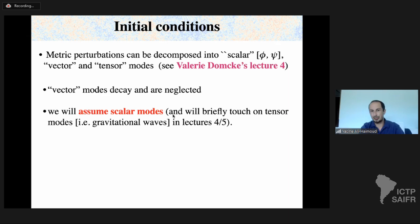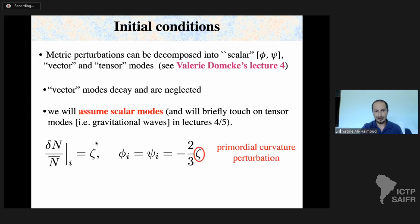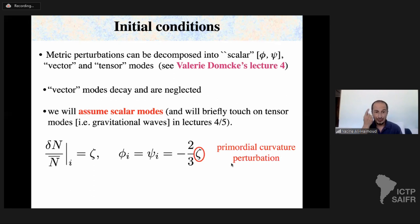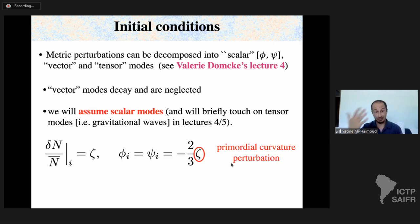Observations are consistent with adiabatic initial conditions, which also arise naturally from single-field inflation. Adiabatic means that fluctuations in the number densities of all species are the same: different patches of the universe have identical ratios of photons to baryons, dark matter, and neutrinos, but those ratios fluctuate from place to place. For baryons and CDM, δ = δn/n; for relativistic species, δ (in energy density) = (4/3)(δn/n). On large scales, initial peculiar velocities vanish. All scalar modes are then related to a single initial variable, the primordial curvature perturbation ζ.